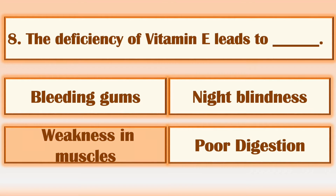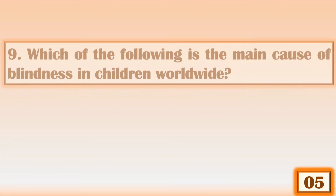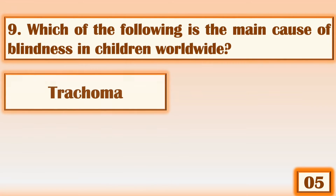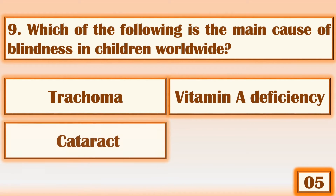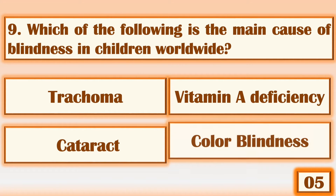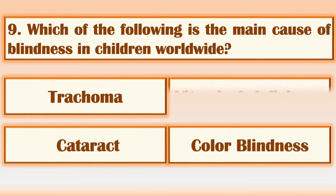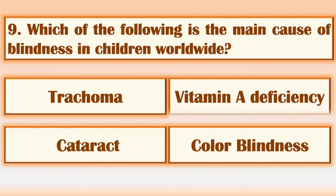The deficiency of vitamin E leads to weakness in muscles. Which of the following is the main cause of blindness in children worldwide? Vitamin A deficiency.